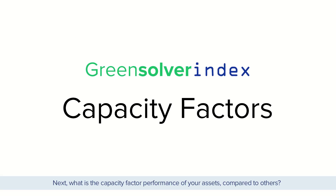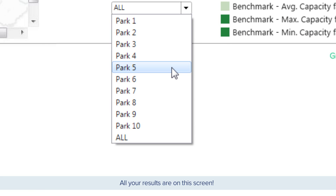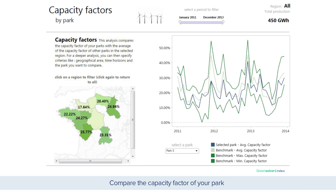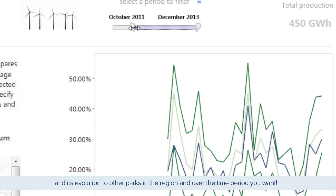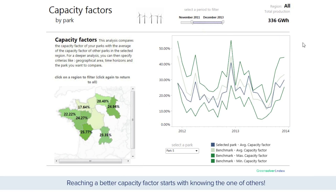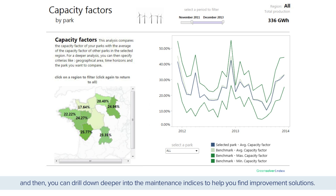Next, what is the capacity factor performance of your assets compared to others? All your results are on this screen. Compare the capacity factor of your park and its evolution to other parks in the region, over the time period you want. Reaching a better capacity factor starts with knowing the capacity factor of others. Greensolver Index helps you identify the low performers in your portfolio, and then you can drill down deeper into the maintenance indices to help you find improvement solutions.